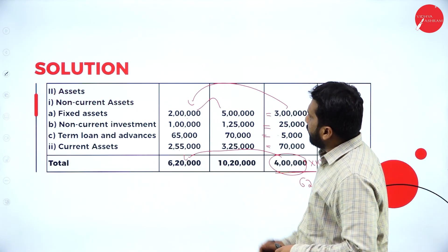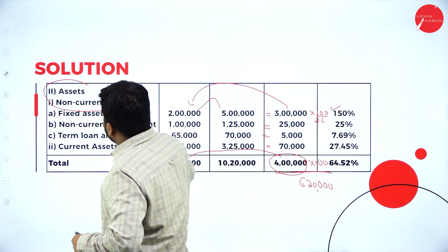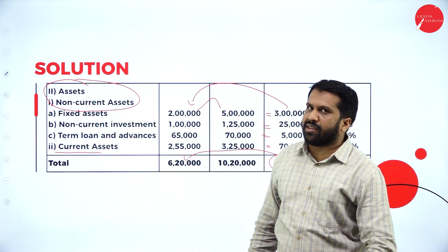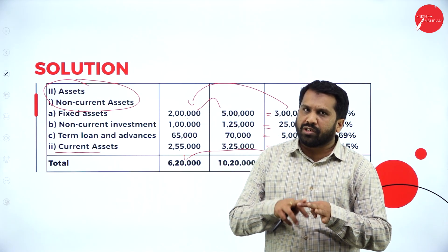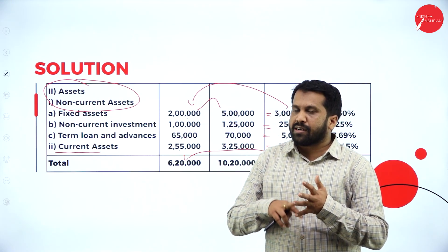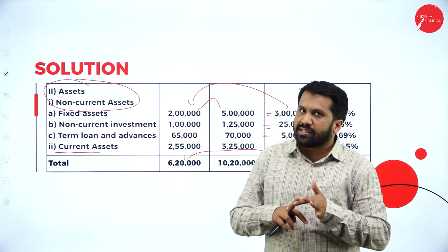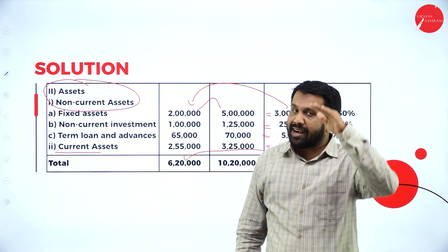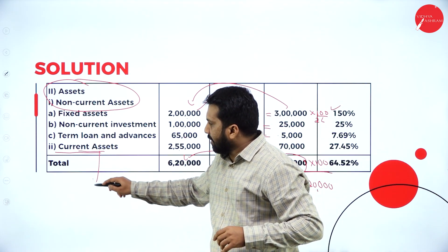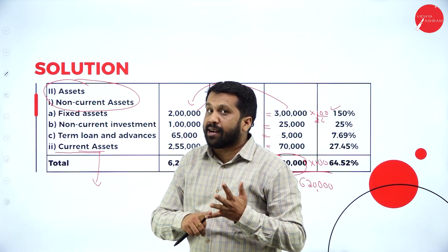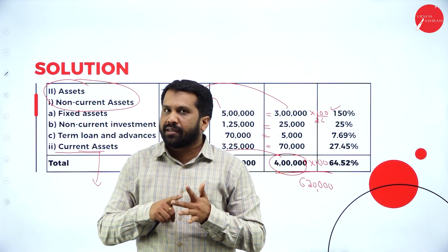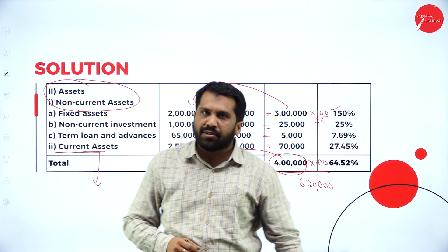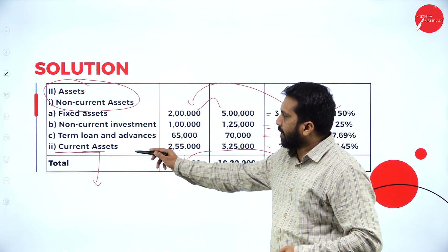Now come to the asset side. There are only two things: one is fixed asset and non-current asset, and the second is current asset. Under fixed and non-current asset, you will get all the land, building, machinery, furniture, goodwill, patent, copyright, investment, advances, and deposit — all comes under fixed and non-current asset. Under current asset, what will come? Debtors, bills receivable, cash, bank balance, prepaid expenses, and closing stock — inventory comes under your current asset.